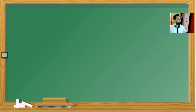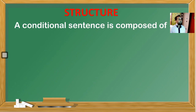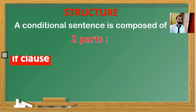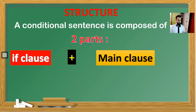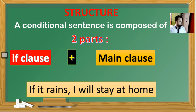Let's see its structure now. A conditional sentence is composed of two parts: the if clause and the main clause. Let's see an example: 'If it rains, I will stay at home.' Eğer yağmur yağarsa evde kalacağım. Our main action is staying at home, and our condition is raining.